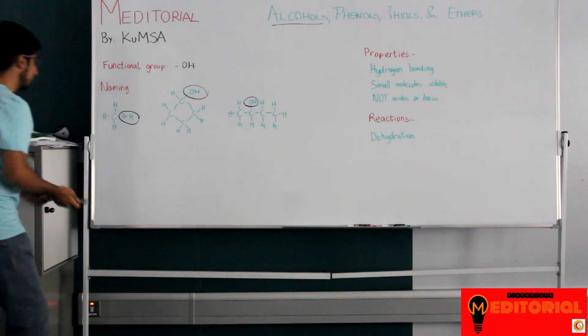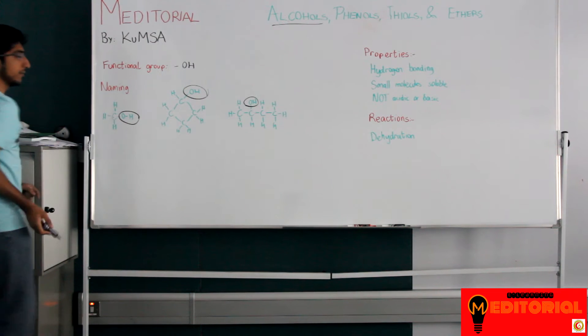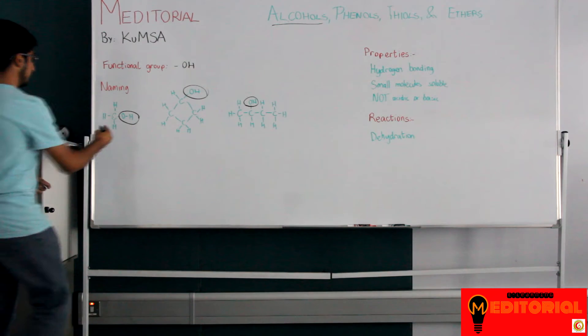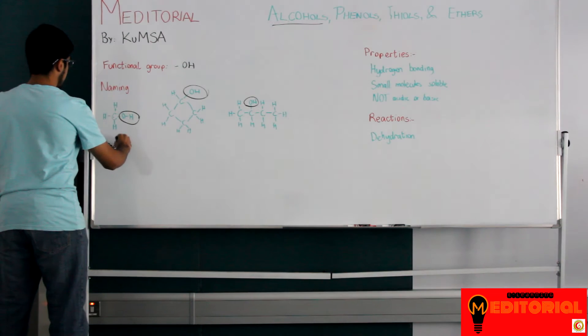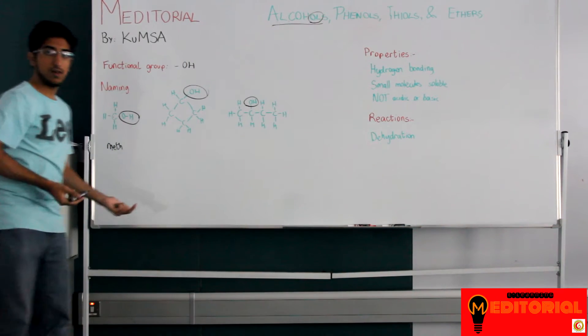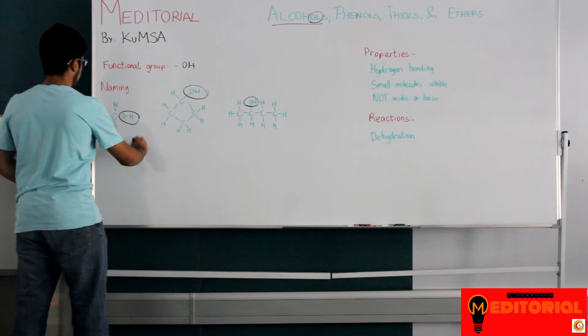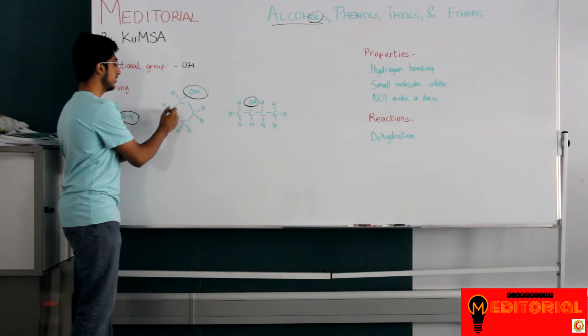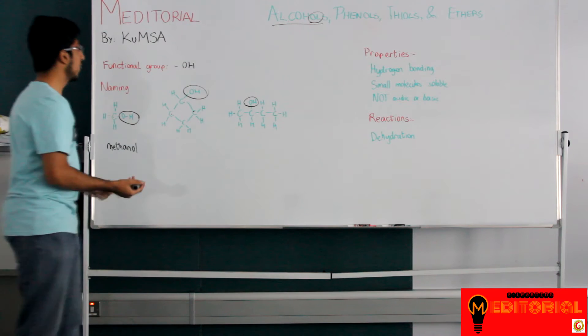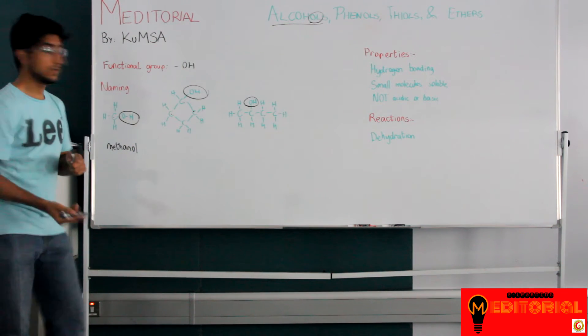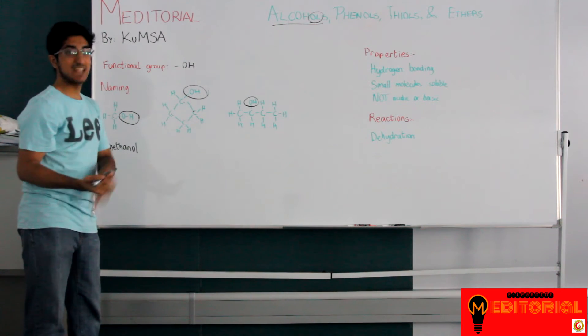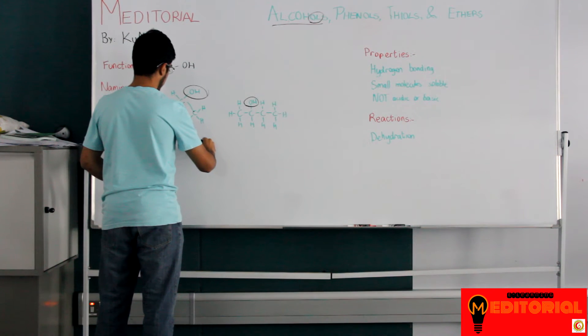We'll go through each one of them. The first one only has one carbon. And if you have one carbon, the prefix has to be meth. And then for alcohols, they all end with -ol. So we have to make our alcohols end with -ol. So this is methanol.